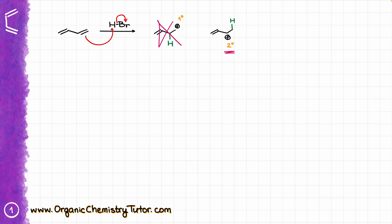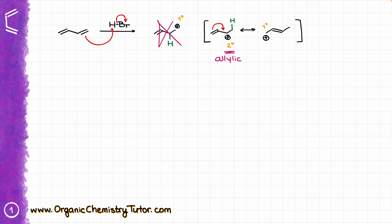In addition to being a secondary carbocation, that carbocation is also allylic, which means it is stabilized by resonance. I can draw a resonance structure where I take the electrons of the pi bond and move them towards the carbocation, giving me another resonance contributor. This is a primary resonance contributor, but resonance contributors represent exactly the same species, meaning our positive charge is distributed between two different locations. Due to resonance stabilization, you should always opt for the allylic carbocation — even over a tertiary carbocation that is not allylic. A resonance-stabilized carbocation will always beat anything else in your molecule.